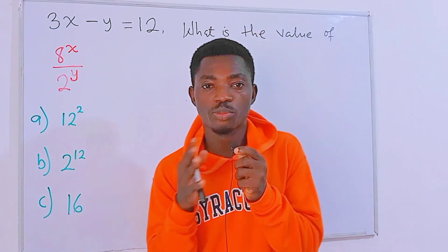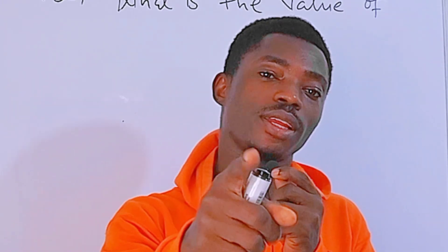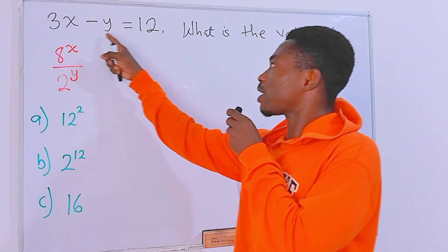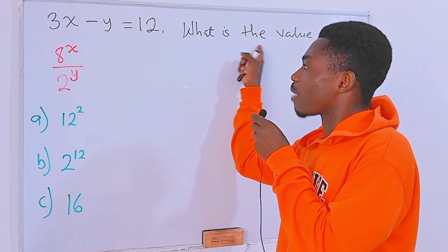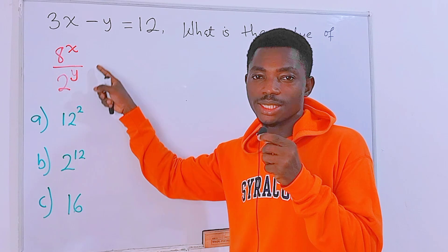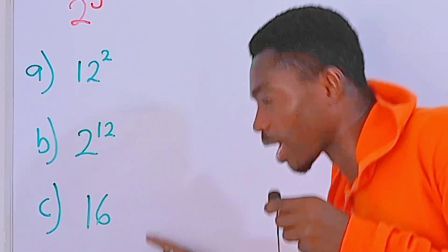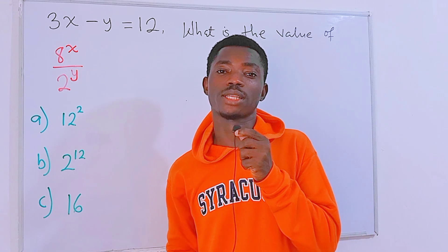This SAT math question right here is pretty much easy, but tricky. Let's check it out. 3x minus y is equal to 12. What is the value of 8 to the power x divided by 2 to the power y? And these are the options you have to select the correct answer from.